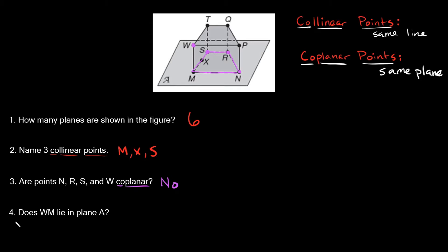Number four asks: does line WM lie in plane A? Line WM is this line right here — it's basically the height of the box. Plane A is like a table that the box is sitting on top of, right underneath the bottom of the box. So the question is asking if line WM is on the table. It's not — WM is the vertical height of the box, not lying flat on plane A. So line WM does not lie in plane A.